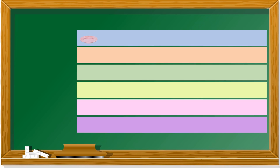Next, we look at this multiplication. One plate but nothing on it, so one times zero — tak ada apa-apa — equals to zero.